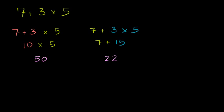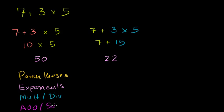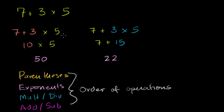The agreed upon order of operations is: do parentheses first, then exponents — if you don't know what exponents are, don't worry about it for this video, we won't have any. Then do multiplication and division next — they have the same level of priority. And finally, do addition and subtraction. That is the agreed upon order of operations, and if we follow it, we should always get the same answer for a given statement.